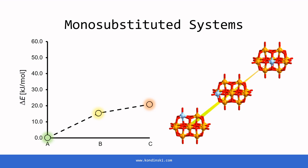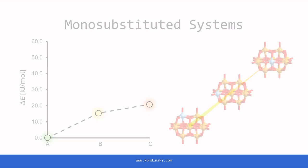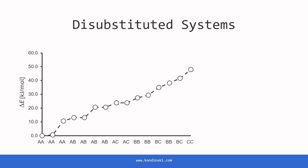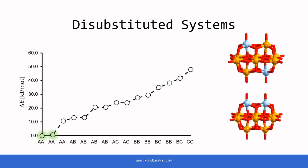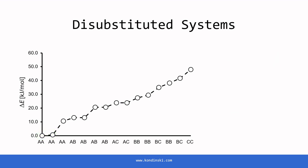This trend is driven by the number of coordination and charge distribution effects. In disubstituted molybdenum-vanadium systems, substitutions at positions 1,4 and 1,2, which are both A-type positions, result in the lowest energy configurations. Conversely, substitutions at positions 7 and 8, which are both C-type sites, lead to the highest energy destabilization.